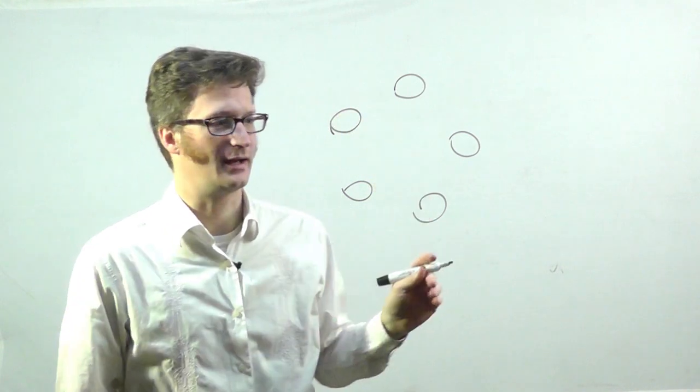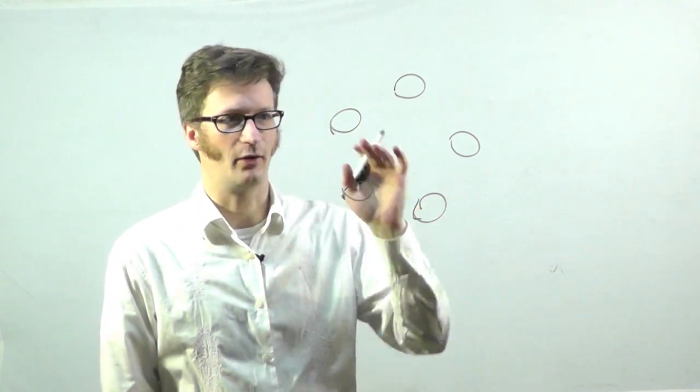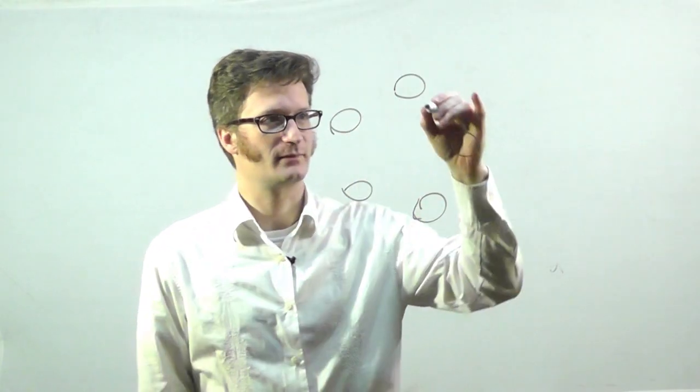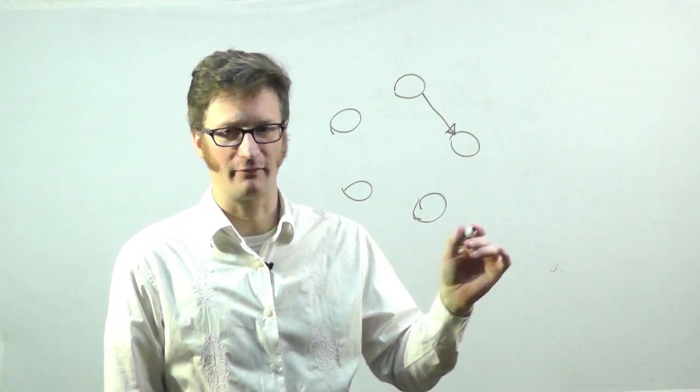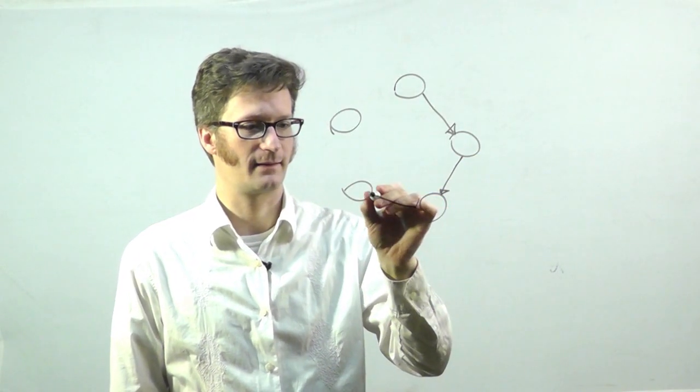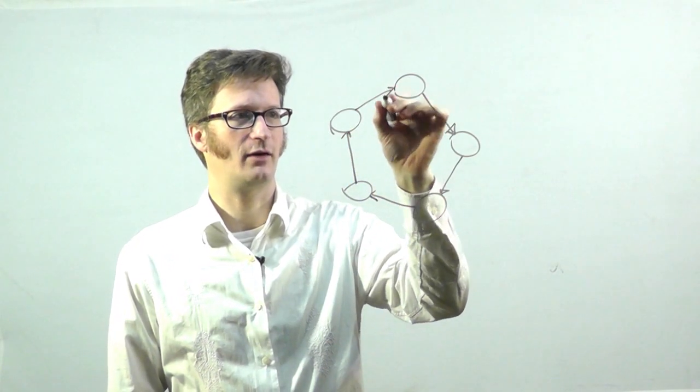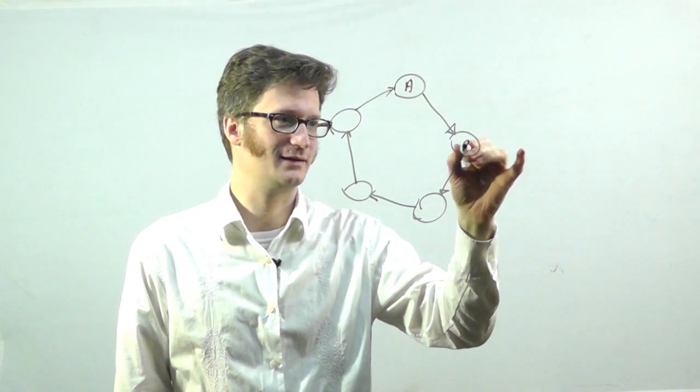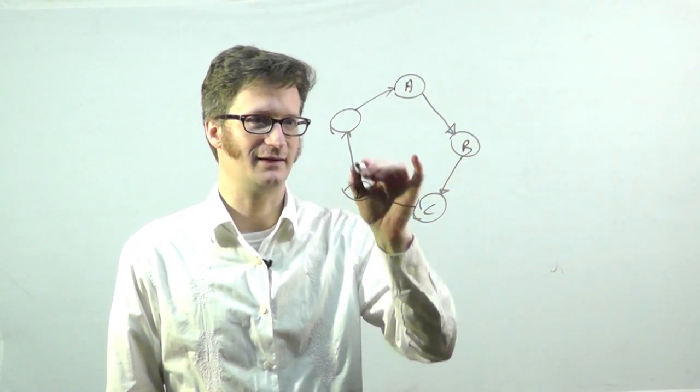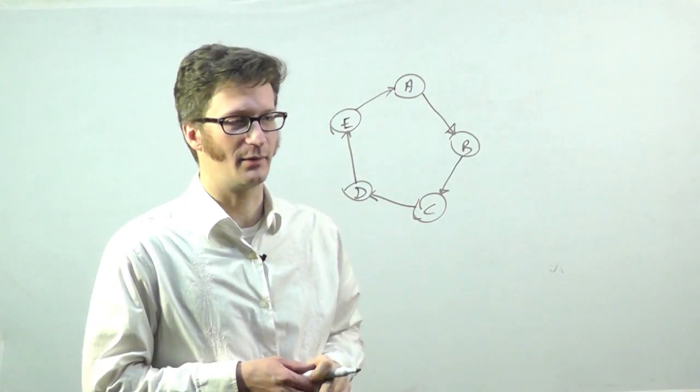A counter could look like this, where it has five states. And at any one time, it's in only one of these states. And the counter has a predetermined pattern that it never deviates from. And so it always goes from state A to B to C, D to E.